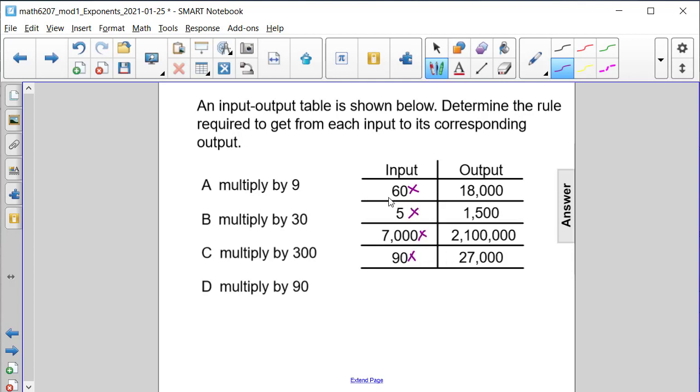And now let's examine first the non-zero digits that we have. 6 to 18, what do I have to multiply by? 5 to 15, what do I multiply by?